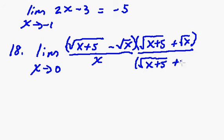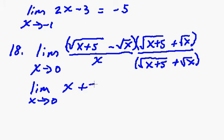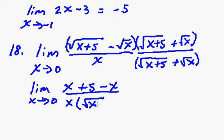and I'm going to rewrite the same thing in the bottom, x plus 5 plus the square root of x. And then to multiply the top out, and we're going to end up with the limit as x approaches 0. And so when I fold the top, I'm going to end up with an x plus 5 minus x.